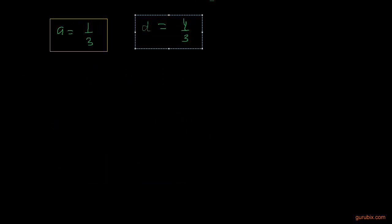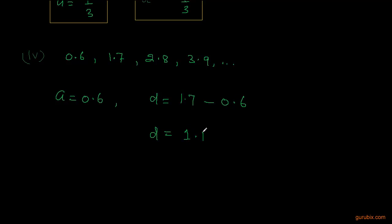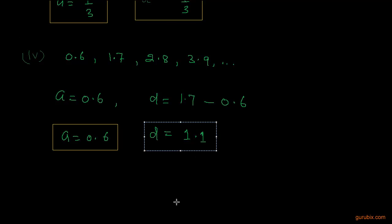Moving to the last part, the fourth part, we are given the AP: 0.6, 1.7, 2.8, and 3.9, and some next terms. The first term is 0.6. We calculate the common difference by subtracting the first term from the second one. The second term is 1.7 and we subtract 0.6 from it, so we get 1.1. Therefore, the first term is 0.6 and the common difference is 1.1. Thank you.